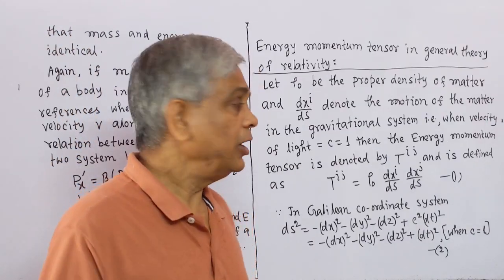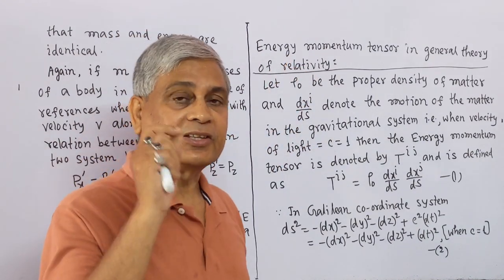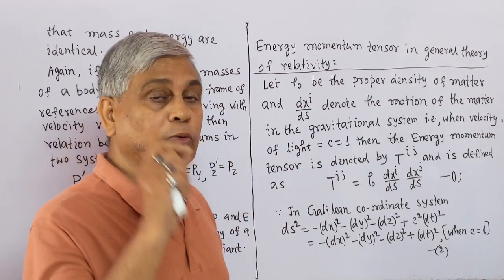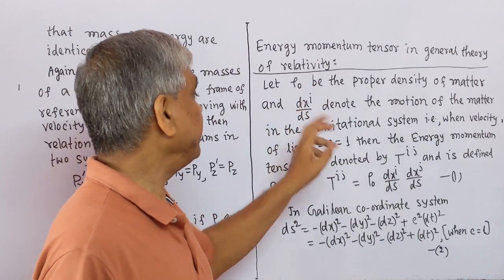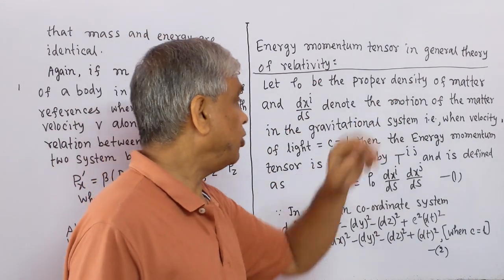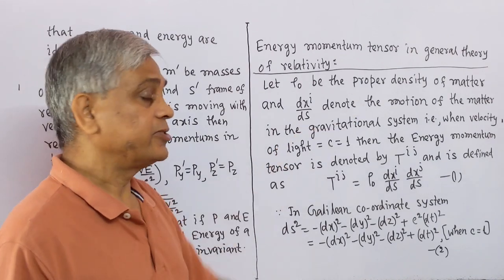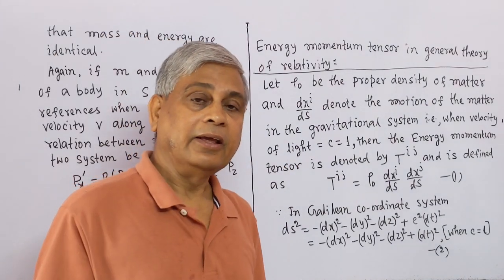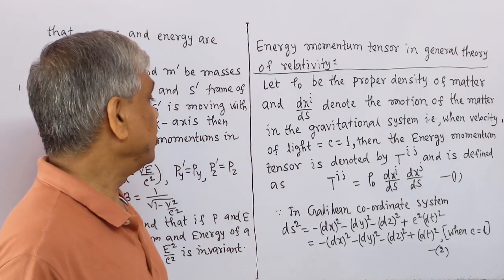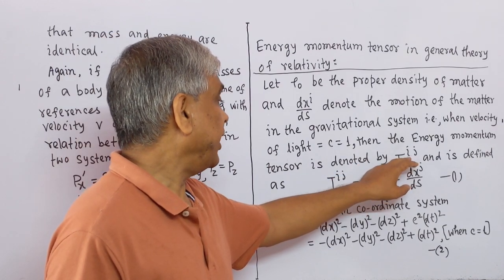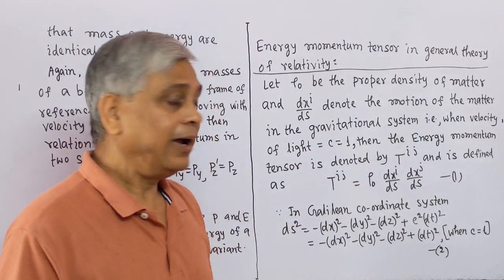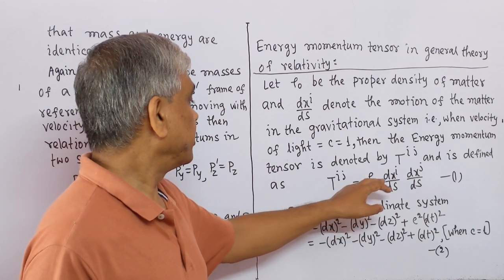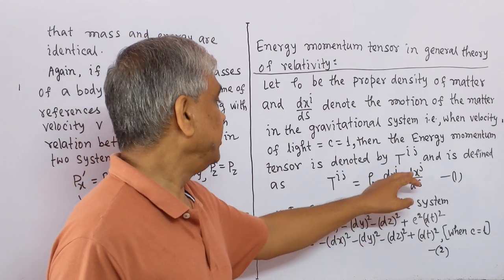Now, I will give you the concept of the energy-momentum tensor in General Relativity. Let ρ₀ be the proper density of matter and dxⁱ/ds denote the motion of the matter in the gravitational system. That is, when the velocity of light C equals 1, the energy-momentum tensor is denoted by the contravariant tensor of rank 2, Tⁱʲ, and is defined as Tⁱʲ = ρ₀ (dxⁱ/ds)(dxʲ/ds). This is equation (1).